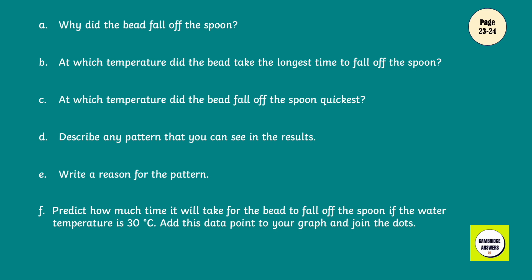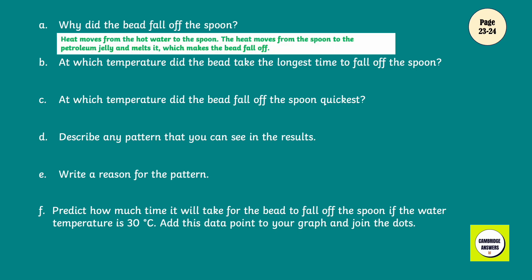Why did the bead fall off the spoon? Heat moves from the hot water to the spoon. The heat moves from the spoon to the petroleum jelly and melts it, which makes the bead fall off. At what temperature did the bead take the longest time to fall off the spoon? 40 degrees Celsius. At what temperature did the bead fall off the spoon quickest? 100 degrees Celsius.